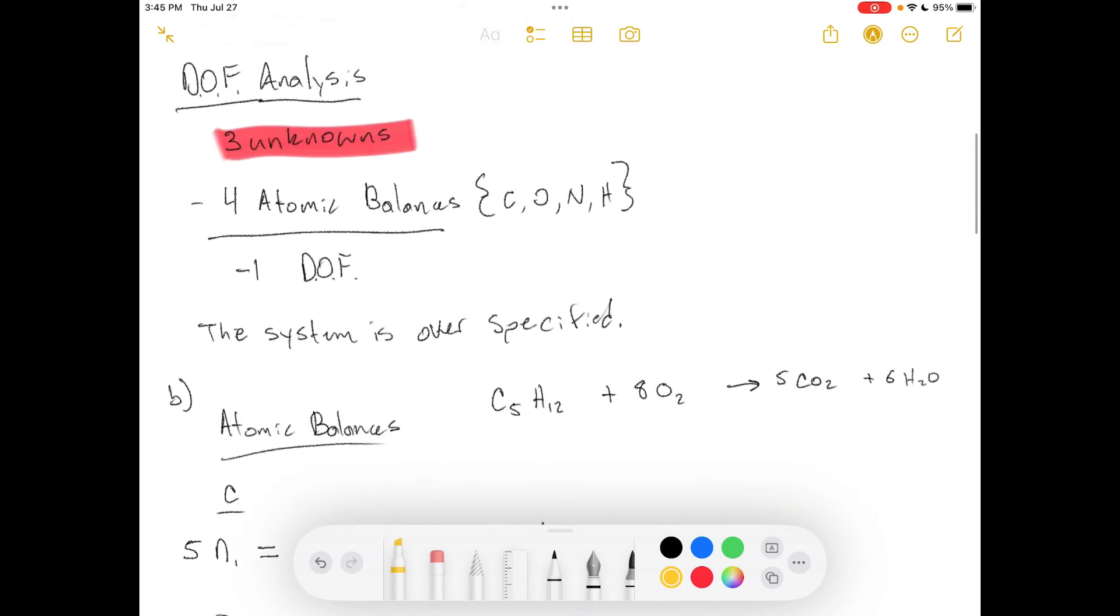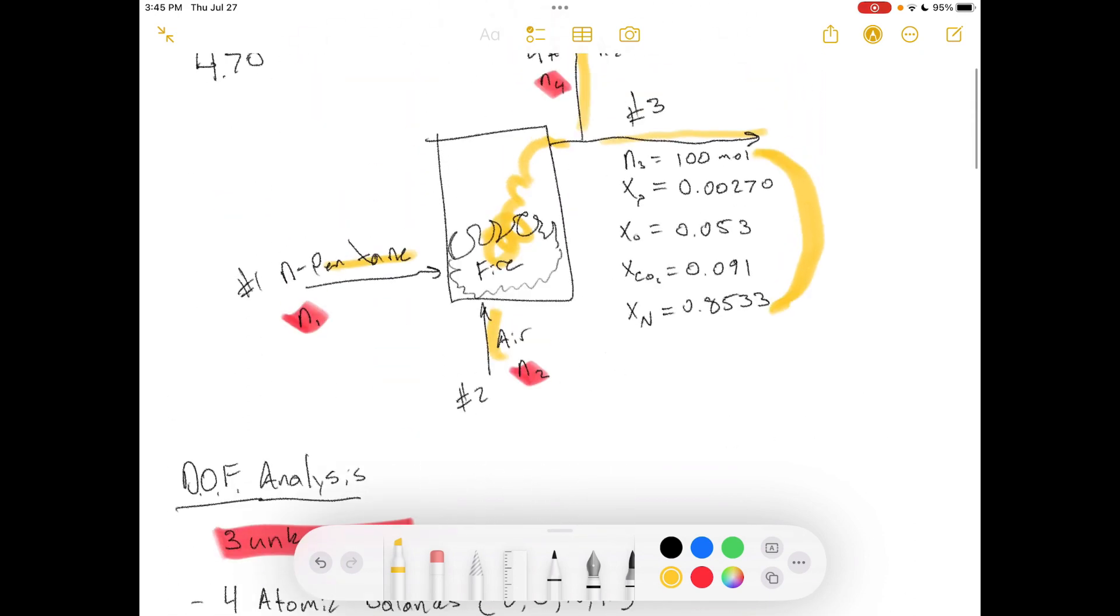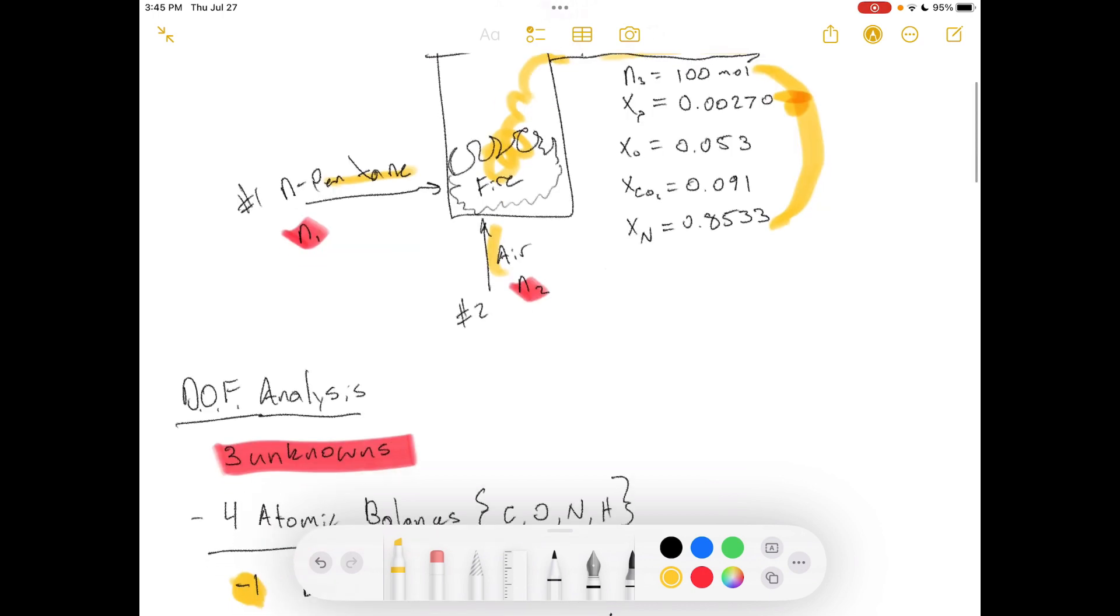The system is over-specified. Sorry, I think I said one degree of freedom. I meant to say we have negative one degree of freedom, right? So the system is over-specified. So that means that we could take away one of these knowns that we have, and we would still be able to calculate all of these unknowns. And then we could use that answer to compare what we got.